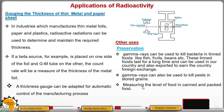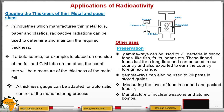Radiation can also be used to measure the level of food in canned and packaged food. Additionally, radioactivity can be used in the manufacture of nuclear weapons and atomic bombs.